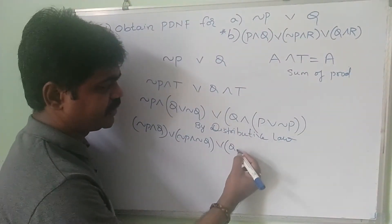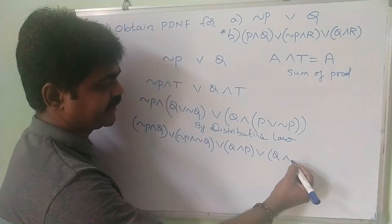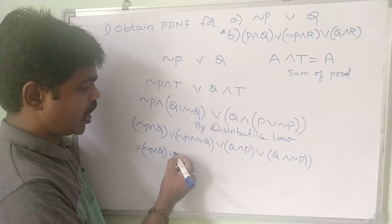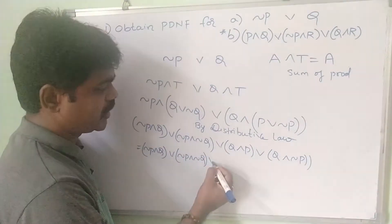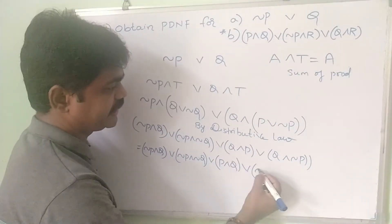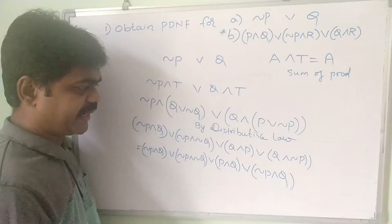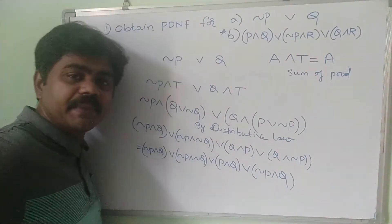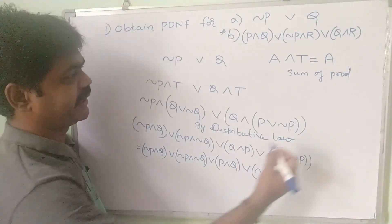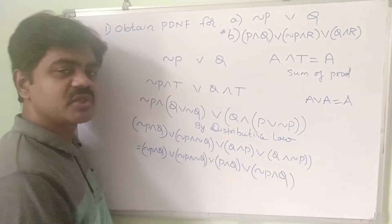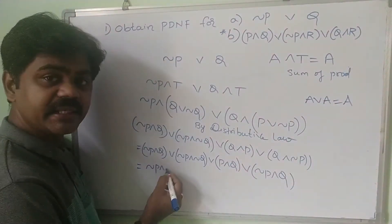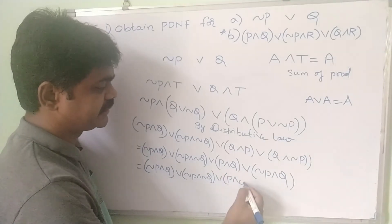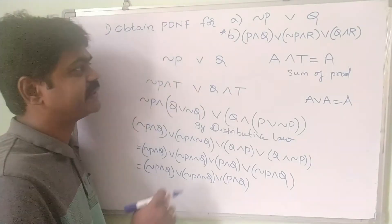Similarly, q AND (p OR negation p) gives q AND p OR q AND negation p. So putting it all together we get: negation p AND q OR negation p AND negation q OR p AND q OR negation p AND q. Since negation p AND q is repeated, and a OR a equals a, we can write it only once. Finally, the PDNF is: negation p AND q OR negation p AND negation q OR p AND q.